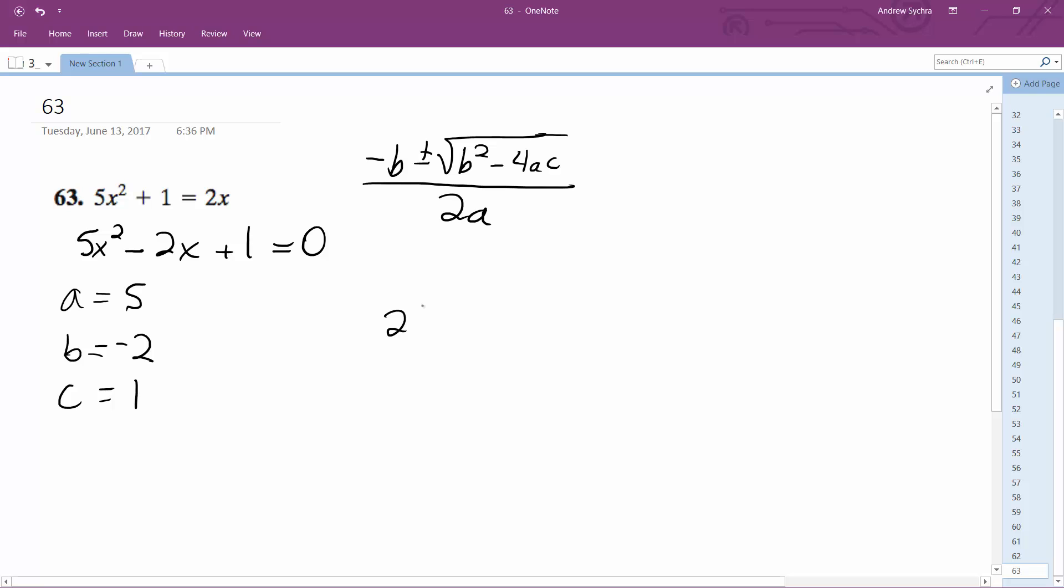Opposite of b, so 2 plus or minus the square root. b squared is 4 minus 4 times 5 times 1. And then 2 times a, which is 2 times 5.